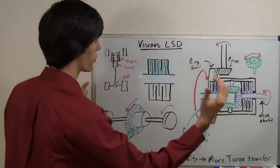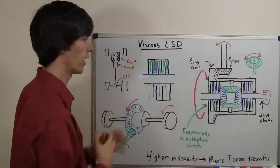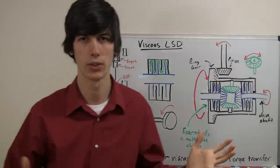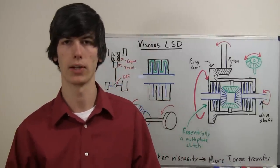And so by doing that, it's transferring torque away from the tire that's slipping to the tire that has more grip, thus achieving the purpose of a limited slip differential.